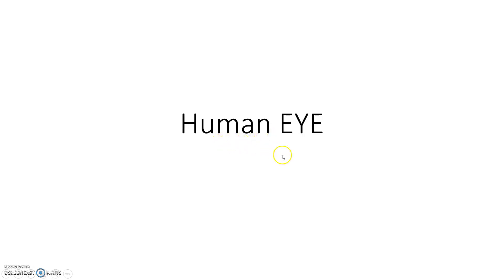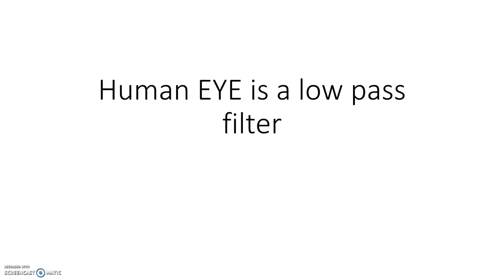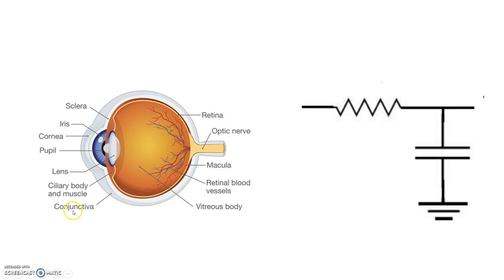Hello friends. In this video I am going to discuss some interesting facts about the human eye. There is a beautiful relationship between the human eye and electronic circuits — the human eye behaves like a low pass filter. Our eye can detect low frequency things easily rather than high frequency things, and I am going to intuitively show you one evidence of that.